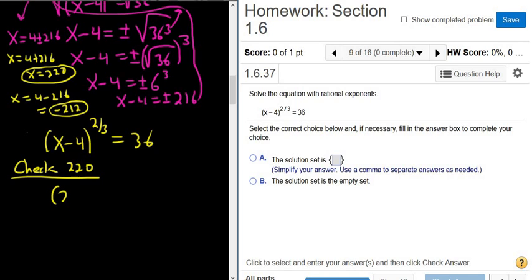I'm going to use a calculator to check this. 220 minus 4 to the 2 thirds, that should be equal to 36. So that's 216 to the 2 thirds. I'm going to type that into my calculator just to make sure. Yep, 36.